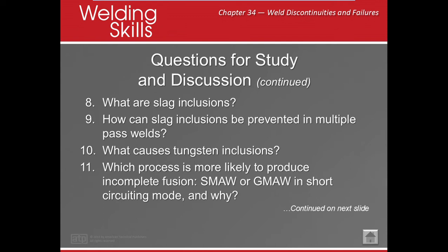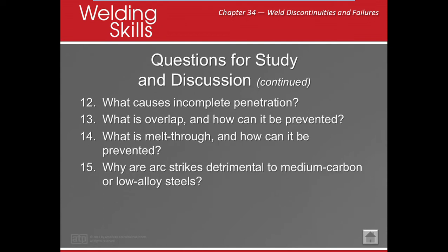GMAW is usually used for thinner materials and out-of-position welding where you don't expect that type of penetration. What causes incomplete penetration? Incomplete penetration can occur when a groove weld is welded from one side only, if the root face dimension is too great, if the root opening is too small, if the groove angle of the V-groove is too narrow, or if the joint design results in electrodes that are too large or tend to bridge. It can also be caused by high rates of travel or insufficient welding current.